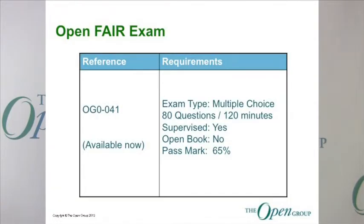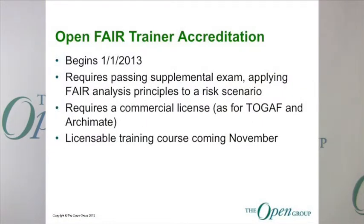The exam itself is a multiple-choice exam with 80 questions and 120 minutes. It's a supervised, closed-book exam, and you can get more details by going to the Prometric website and looking up the Open Group FAIR certification — I think the test is OG041. Trainer accreditation starts November 1st and requires that trainers pass a supplemental exam so they're able to apply FAIR principles to a specific risk scenario. It also requires a commercial license for the trainer, as with our other TOGAF and ArchiMate training programs. We'll also have a licensable training course from the Open Group for trainers to use coming in November.